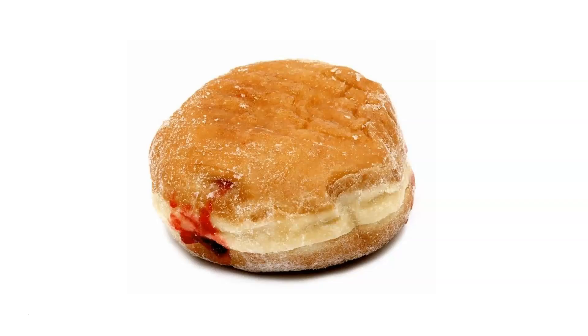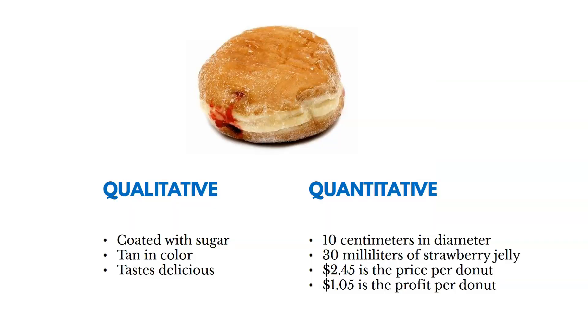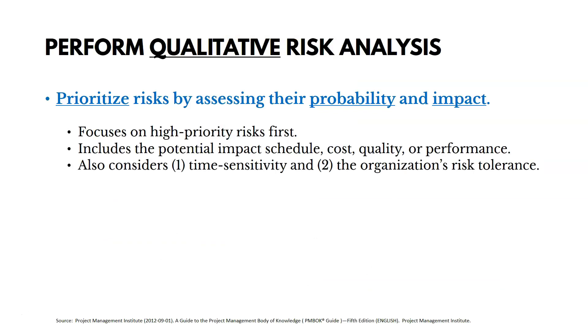There are two types of risk analysis: qualitative and quantitative. Think about a donut — qualitative aspects are text descriptions like it's coated with sugar, tan in color, and tastes delicious. Quantitative is different — we're numerically characterizing things, like it's 10 centimeters in diameter, has 30 milliliters of strawberry jelly, and has a specific price and profit. Similarly, qualitative risk analysis is text-based, while quantitative analysis numerically analyzes the possible effect of those risks.